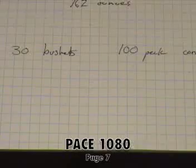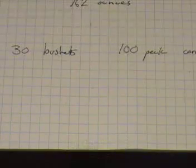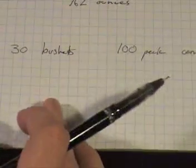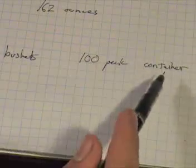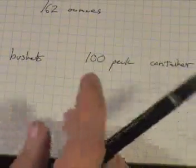Page 7: If you have 30 bushels of wheat, will it fit in this 100 peck container? Well, to do that, you have to put them in comparable units.